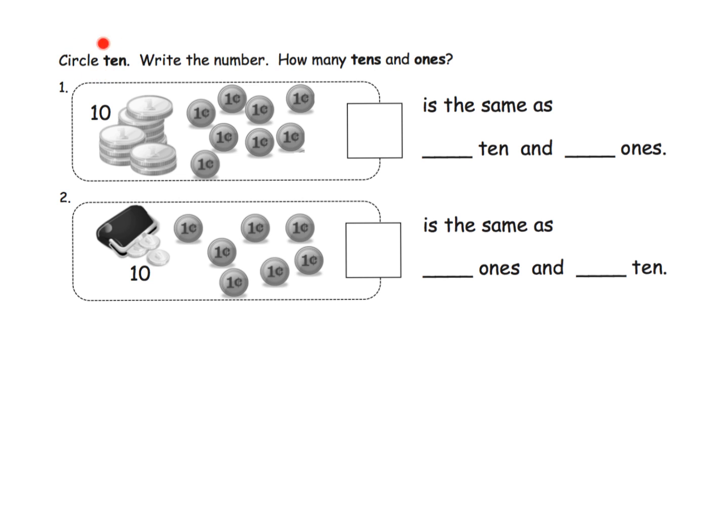So here we're being asked to circle 10, write the number, and then write down how many tens and how many ones we see. This is a little funky, so let's take a look at this. What we see is we have one 10, we're going to call that our 10, and then we can count 1, 2, 3, 4, 5, 6, 7, 8, so we have eight ones, so we have 18. So there's our number, 18.